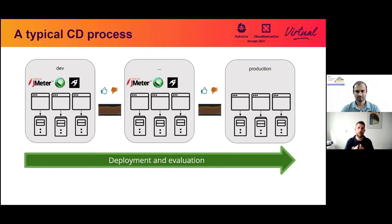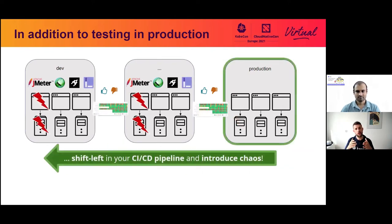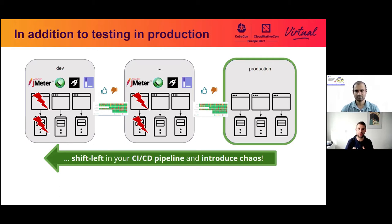This is totally fine, but in production there's always something happening that you maybe cannot foresee or really test. There is a trend of testing in production and trying to break production to get insights into what has to be improved. But today we really want to advocate for moving this idea to pre-production environments — adding chaos tests in addition to performance and load tests, evaluating them on resilience criteria, and keeping production a safe place with the green lights on.